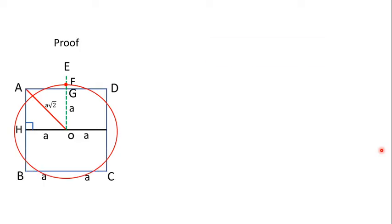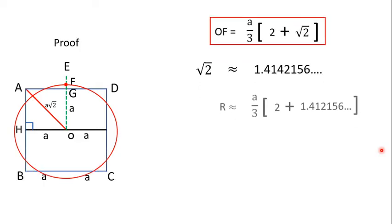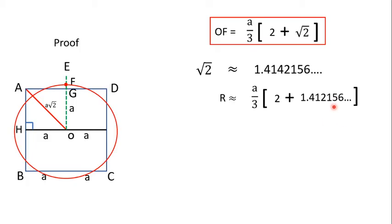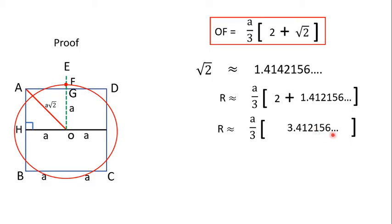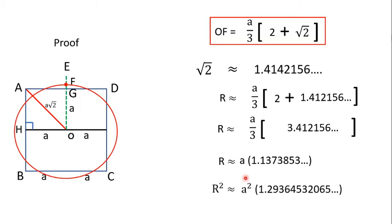Using this value, substituting √2 ≈ 1.4142156, the numerator becomes 2 + 1.4142156 = 3.4142156. Dividing by 3, the radius r is approximately A × 1.1373853. Since the area of a circle is πr², we find r² = A² × (1.1373853)².